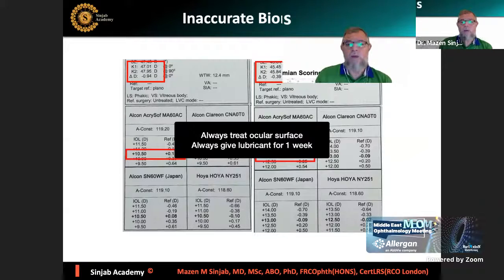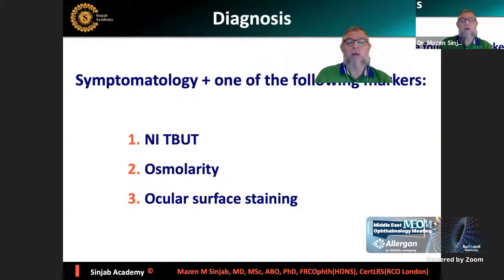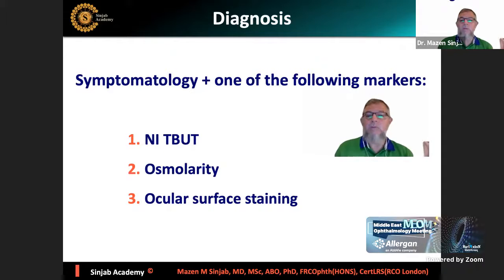Regarding the diagnosis of dry eye disease, the best test is osmolarity because it is the most accurate. According to TFOS DEWS2, the diagnosis should be made by having symptoms in addition to one of the following markers: non-invasive tear breakup time, abnormal osmolarity, or ocular surface staining. If there are no symptoms, it is not dry eye disease - it may be another ocular surface disease.